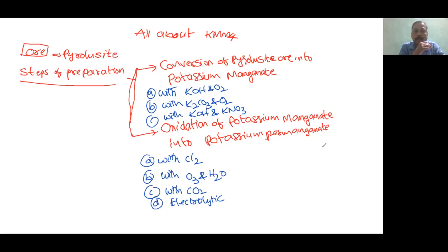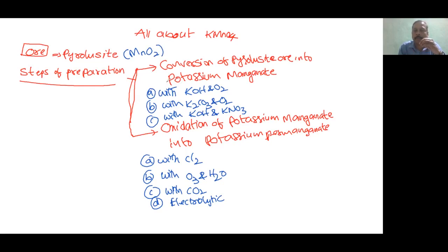KMnO4 is prepared from the pyrolusite ore. Pyrolusite is the commercial name; its chemical name is MnO2. For easy understanding, the preparation is divided into two steps. KMnO4 is obtained from pyrolusite in two steps.